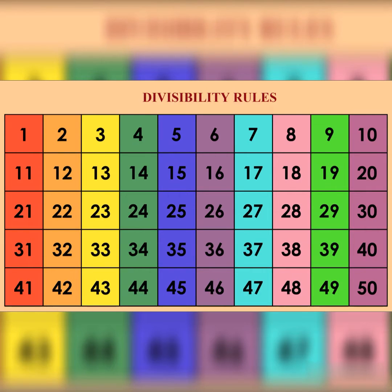Divisibility by 5 – a number is divisible by 5 if its units place is 0 or 5.